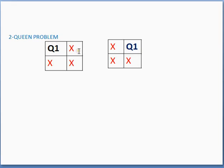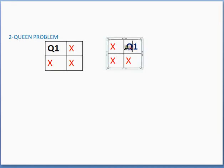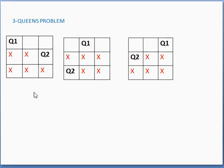For the two-queens problem, we take a 2×2 chess board. Starting with Q1 in the first position, we try to place Q2 at all remaining positions, but all positions come under the same row, same column, or same diagonal. Similarly, placing Q1 in the other position also makes it impossible to place Q2. Hence there is no solution for the two-queens problem.